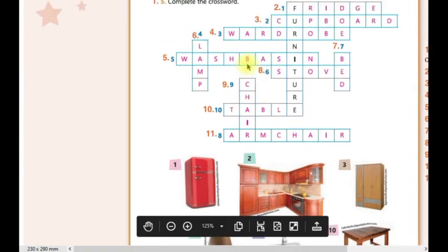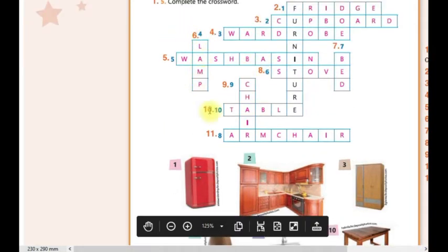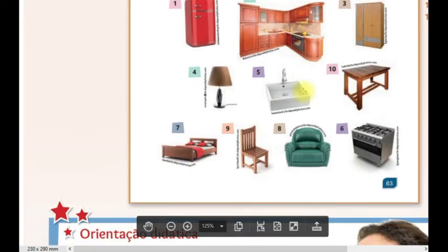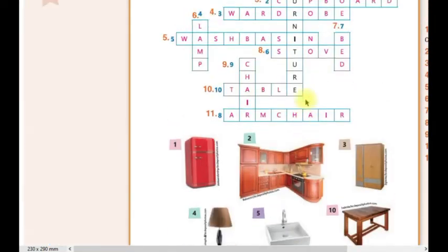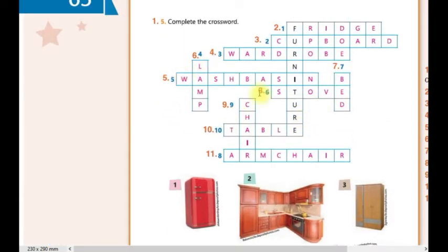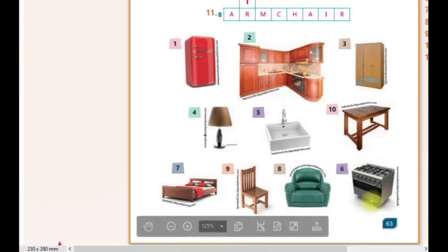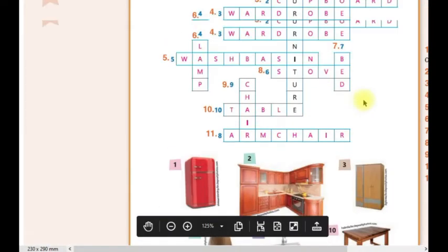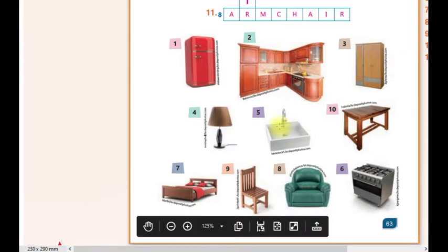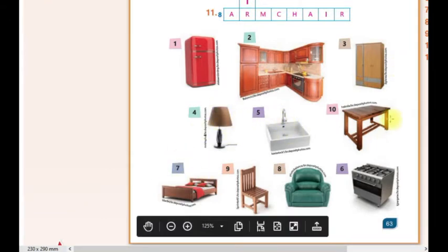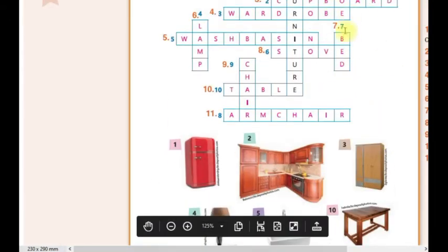Vamos ver aqui. Número 4 é a lamp, que é a lâmpada ou o abajur. Número 5 é o wash basin, que é a pia do banheiro. Temos essa diferença entre as pias. Número 6 é o stove, que é o fogão. Número 7 é a bed, a cama.